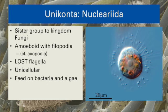The nucleariids have been difficult to place based on cellular anatomy alone. They are amoeboid but have filopodia — needle-like pseudopodia that are flexible. Contrast them with axopodia, such as we saw in radiolarians, where the pseudopodia are long, skinny, and rigid. The nucleariids are unicellular and are typically detritivores or very tiny predators, feeding on bacteria, other protists, or algae.